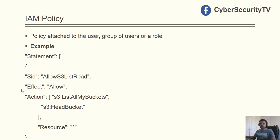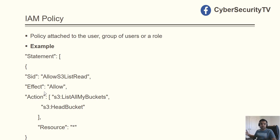Here's an example of an IAM policy. You have a statement, a policy name, and an effect — whether to allow or deny access — based on the actions listed. In this case, the actions are S3 ListAllMyBuckets and HeadBucket, allowed on all resources (resource: *). Remember these key terms: effect, action, and resource. There's also a principal — whether the principal matches what's mentioned in the policy.